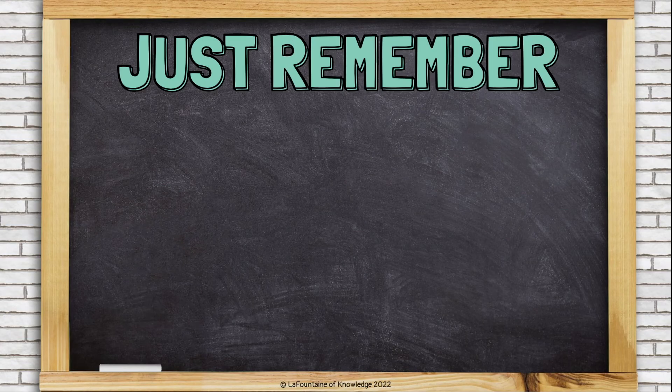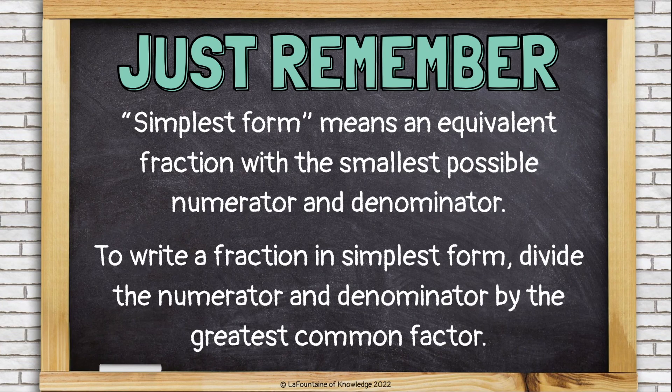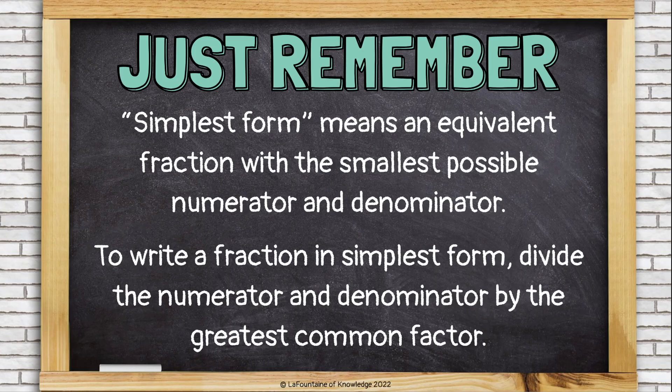Just remember, simplest form means an equivalent fraction with the smallest possible numerator and denominator. To write a fraction in simplest form, divide the numerator and the denominator by the greatest common factor.